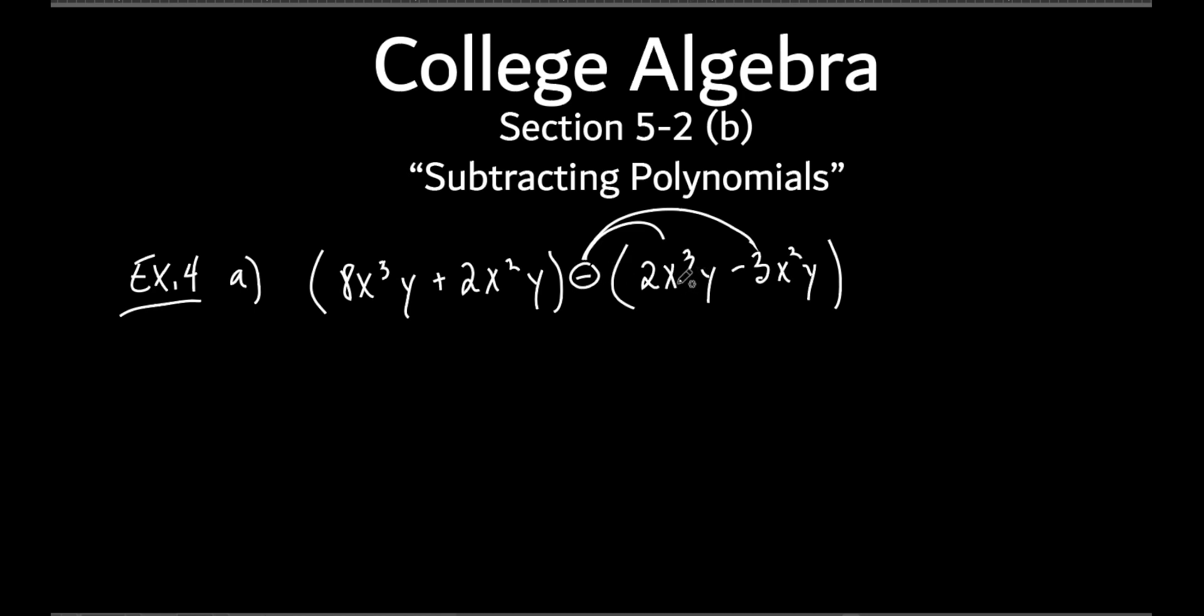What that basically does is just change the sign of it. The sign of this little monomial right here is positive, but we're going to subtract it, so it's going to become minus. This one is minus. What does that negative do to that minus? It makes it a positive. So really, all we're going to do is just rewrite everything.